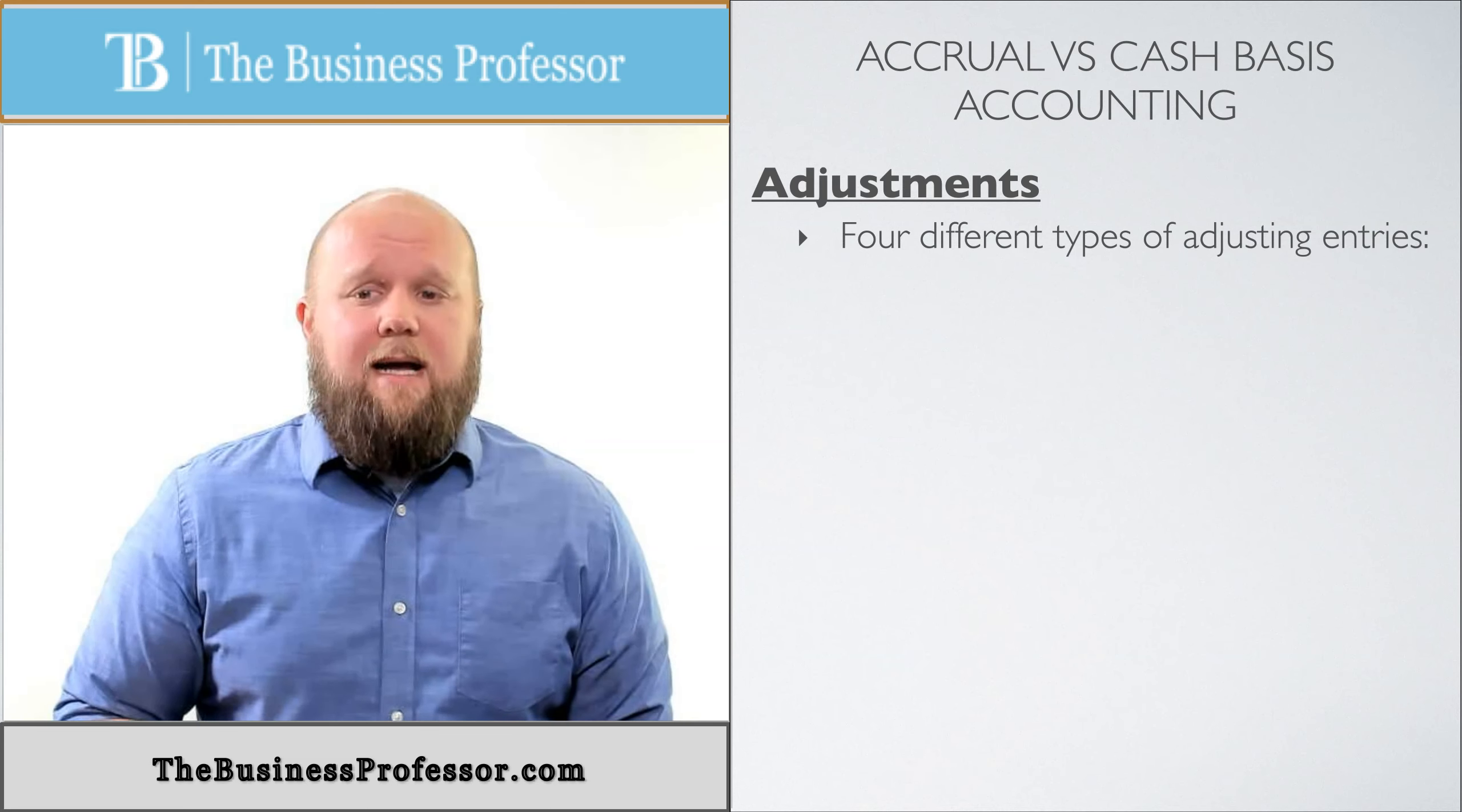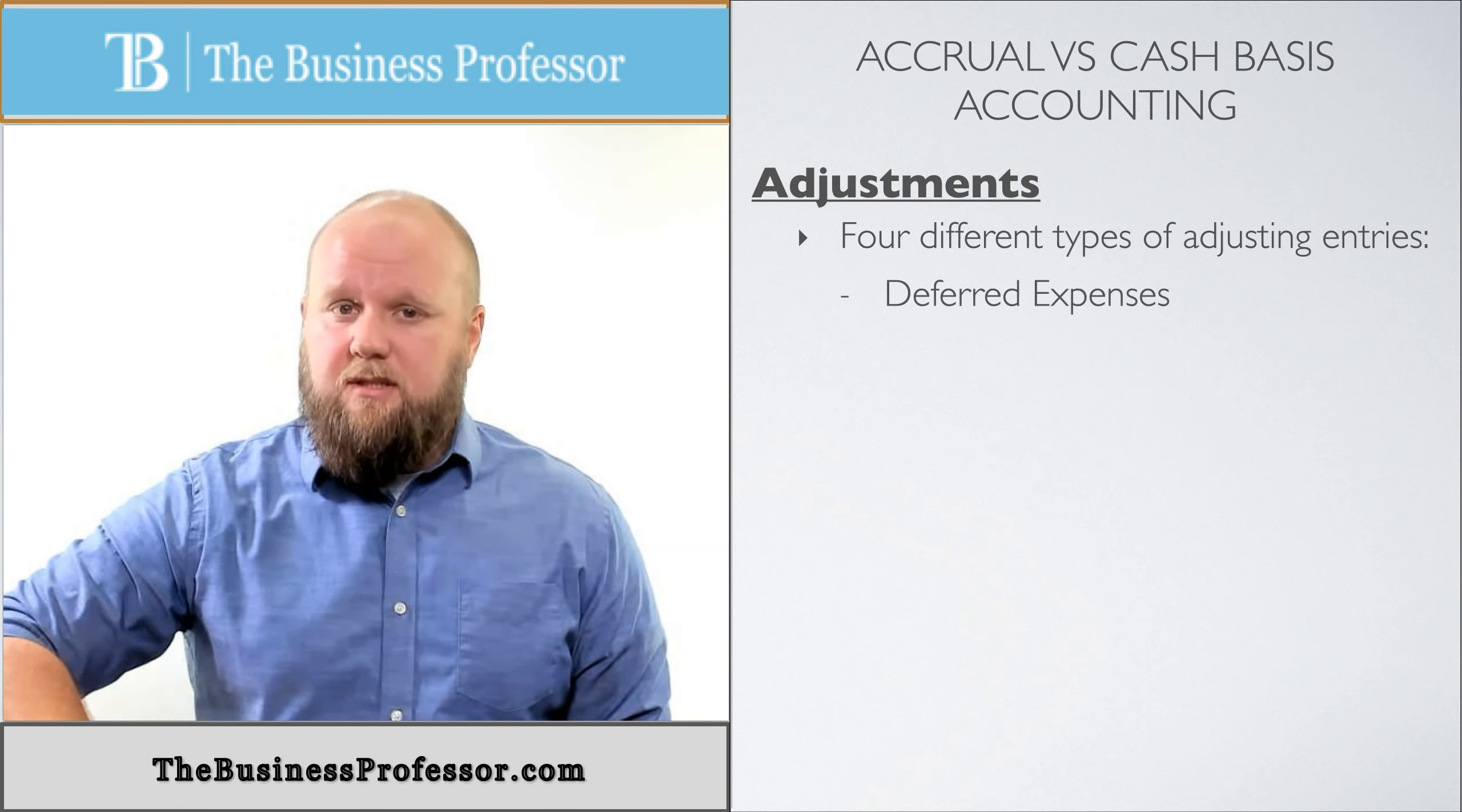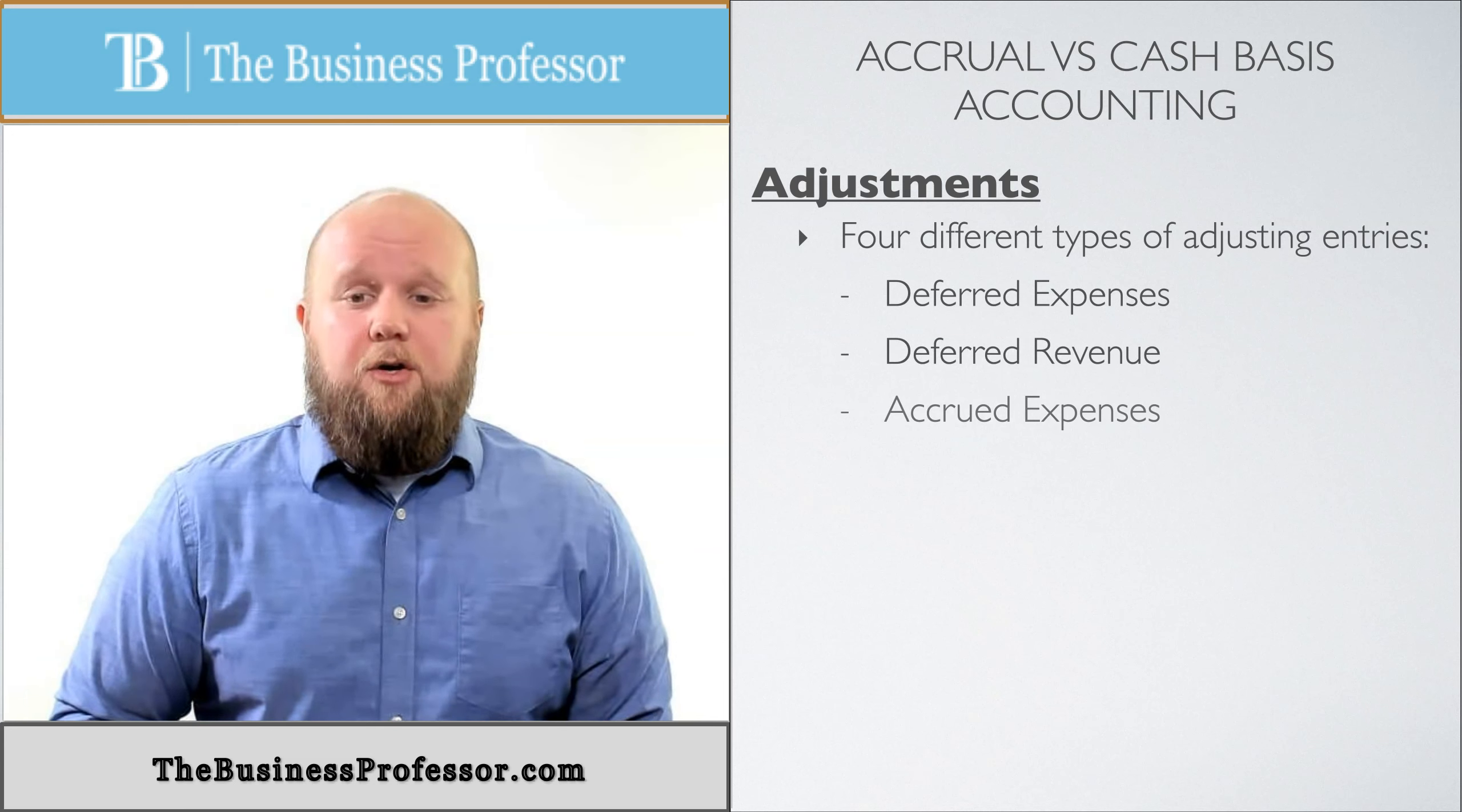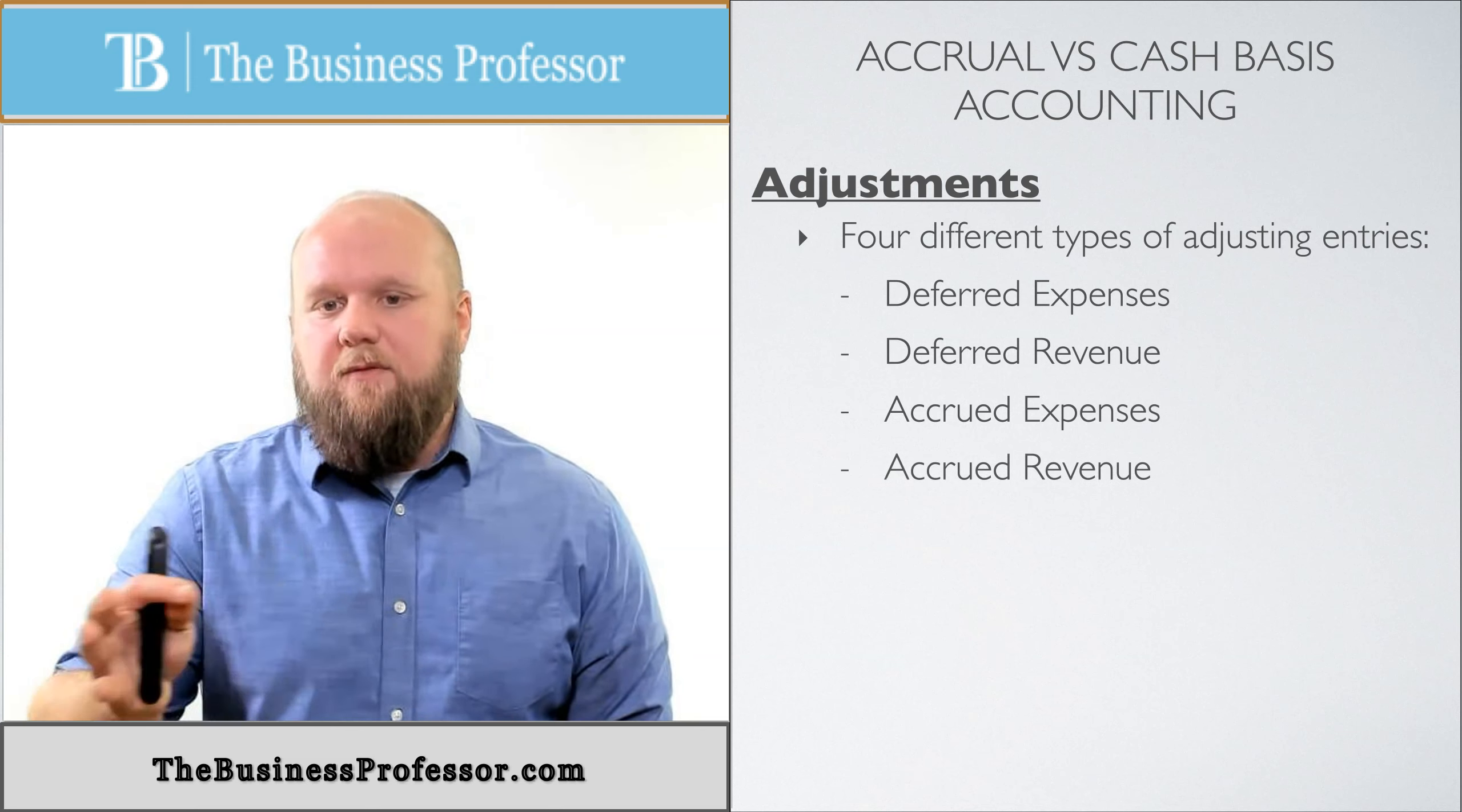Four different types of adjusting entries. There are four different things and these are the next four videos really that we're going to be talking about. Deferred expenses. These are deferred. We're going to push these expenses into the very end. Deferred revenues. You're going to push these revenues to the very end. Accrued expenses. These are things that we've amassed or saved up as expenses and we're going to do that at the very end. And then we also have accrued revenue. So we're going to do examples of each.